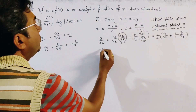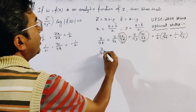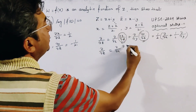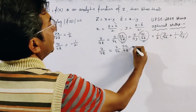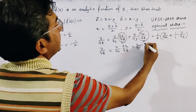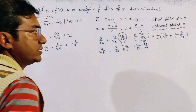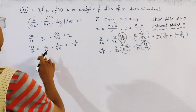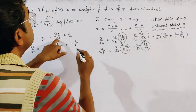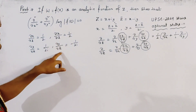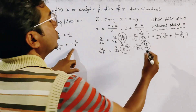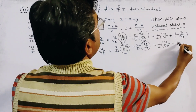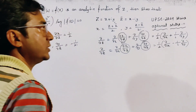Similarly, we write ∂/∂z̄ = (∂/∂x)(∂x/∂z̄) + (∂/∂y)(∂y/∂z̄). Substituting ∂x/∂z̄ = 1/2 and ∂y/∂z̄ = −1/(2i), we get ∂/∂z̄ = (1/2)(∂/∂x − (1/i)∂/∂y).